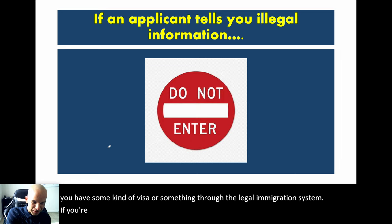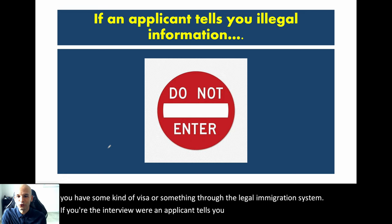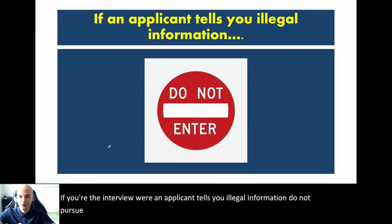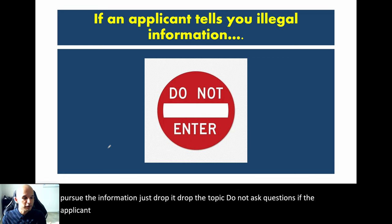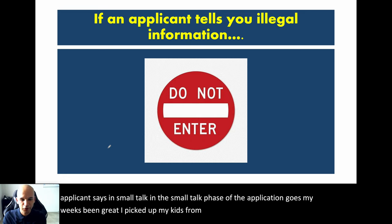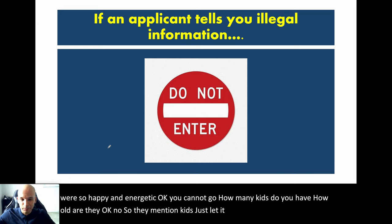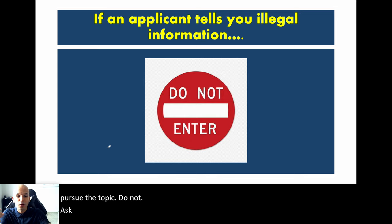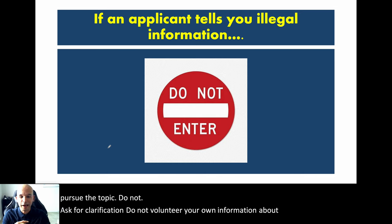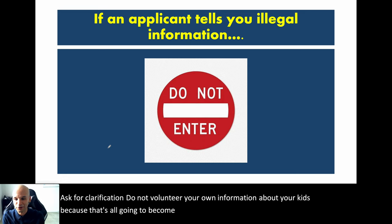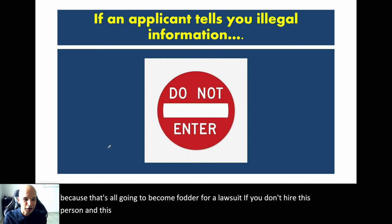If you're the interviewer and an applicant volunteers illegal information, do not pursue it — just drop the topic. If in small talk the applicant says 'I picked up my kids from soccer practice yesterday,' you cannot respond with 'Oh, how many kids do you have? How old are they?' They mentioned kids — just let it go. Do not ask follow-up questions, do not clarify, and do not volunteer your own information about your kids, because all of that could become fodder for a lawsuit if you don't hire this person.